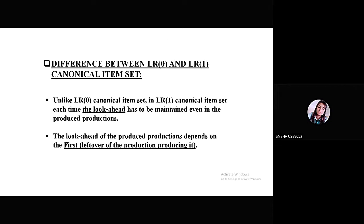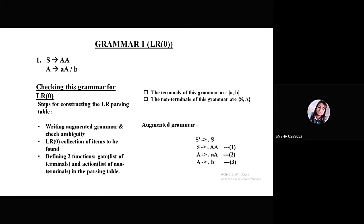The basic difference between LR0 and LR1 is that lookaheads are supposed to be maintained in canonical items in LR1, even in the produced productions. Now we have taken a grammar of type LR0. First of all, we need to know the steps. Firstly, we have to write the augmented grammar and check ambiguity.